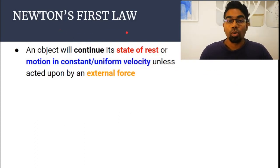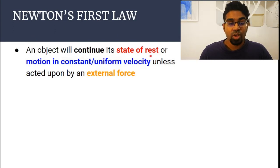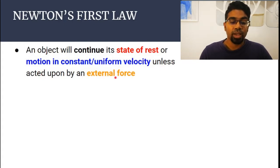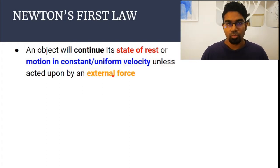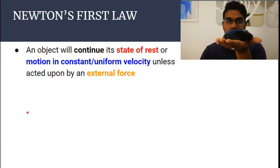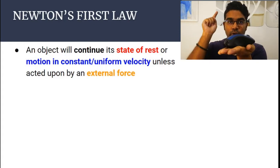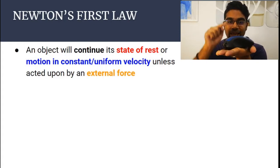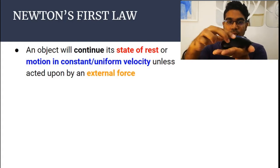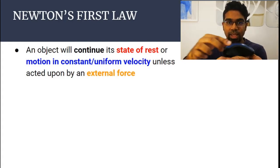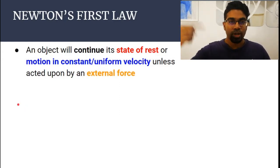First let's look at Newton's first law. Newton's first law states that an object will continue its state of rest or motion in constant or uniform velocity unless acted upon by an external force. So when an object is either moving or not moving — for example if I have this on my hand, it's not moving and it will continue to stay at rest unless I apply an external force.